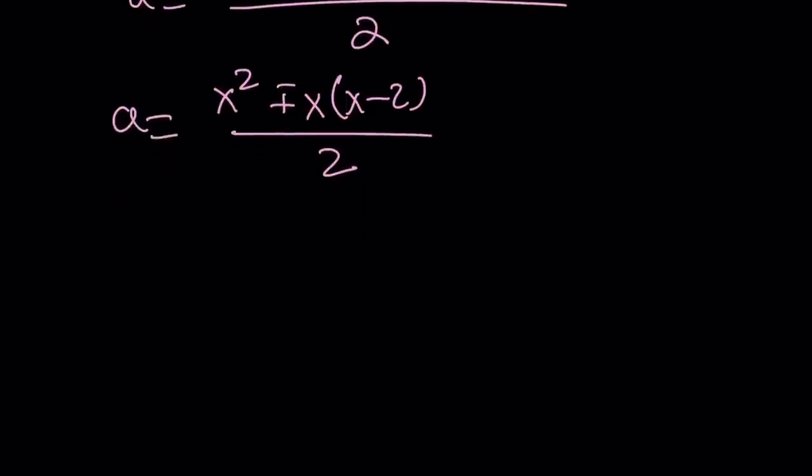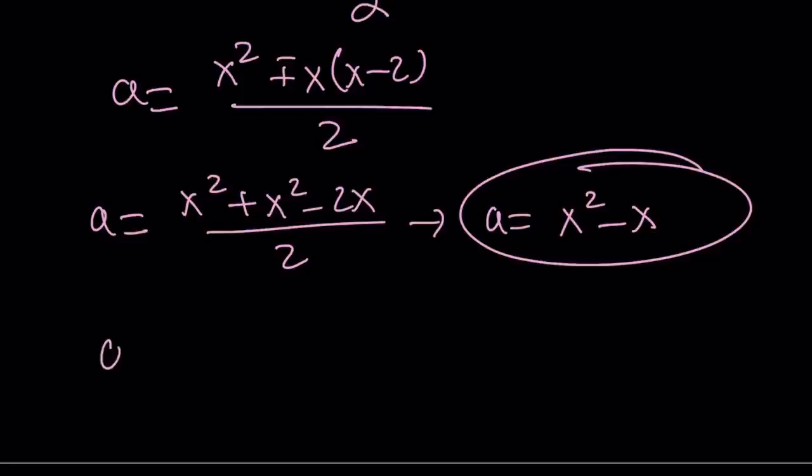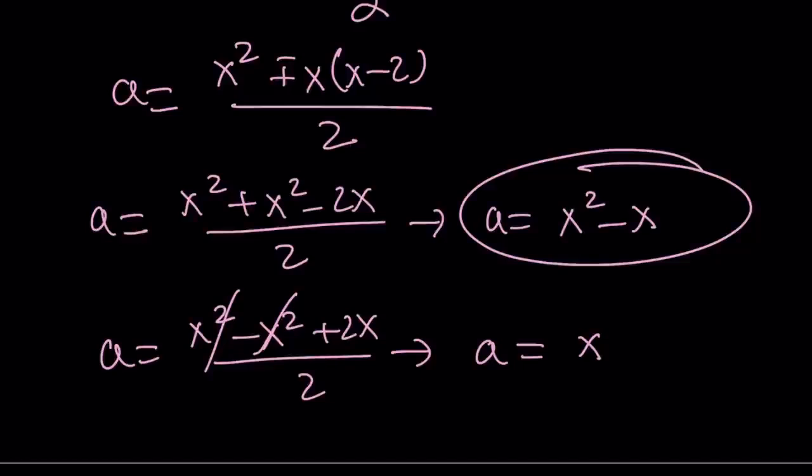Now we can split it up into two solutions and see what A is in terms of x. One of the solutions is going to give us A equals, let's start with the plus sign, x squared plus x squared minus 2x divided by 2. And from here A equals x squared minus x. So that's going to be one of my solutions. Remember our equation is quadratic in A and we're solving for A. The second one comes from the minus sign x squared minus x squared plus 2x divided by 2. That gives us an even simpler solution because x squared cancels out and we end up with A equals x.